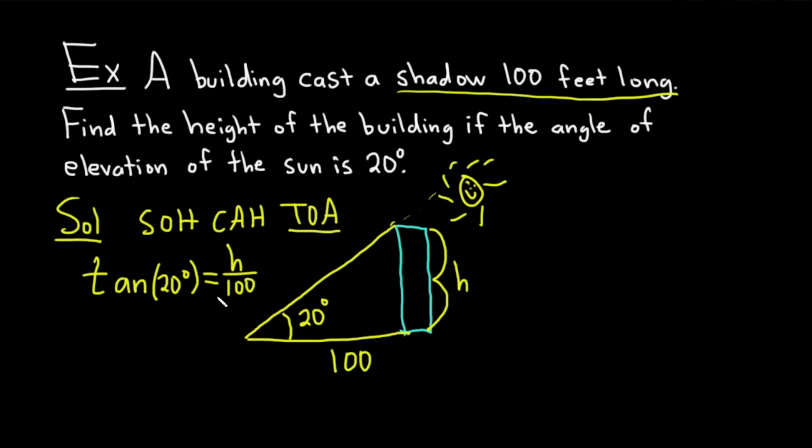And again, we knew to use tangent because that's what's given in the problem. The opposite and the adjacent. We can solve this for H by multiplying both sides by 100.